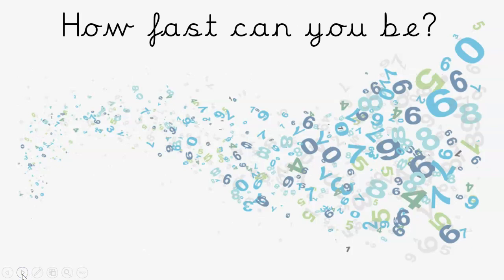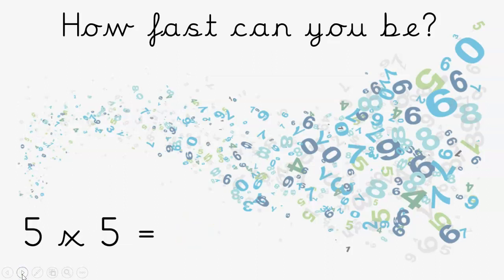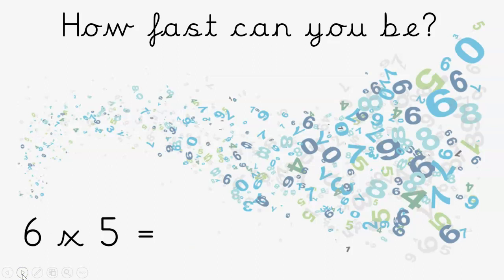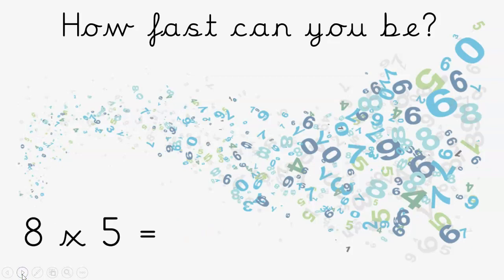Let's see how fast you can be now — double speed! Are you ready? What's five times ten? Fifty. What's three times ten? Thirty. What's five times five? It's twenty-five. What's seven times two? It's fourteen. Six times five? Thirty. Hope you're keeping up. What's eight times five? It's forty.